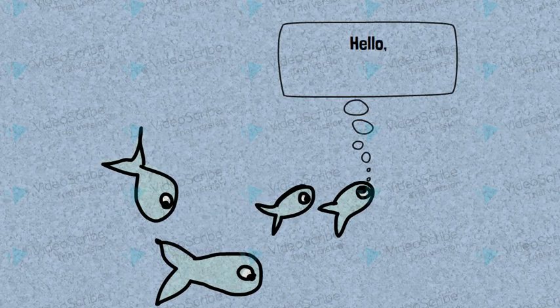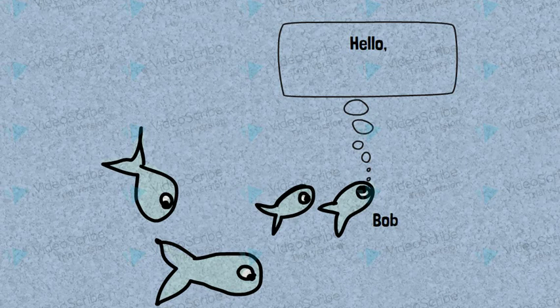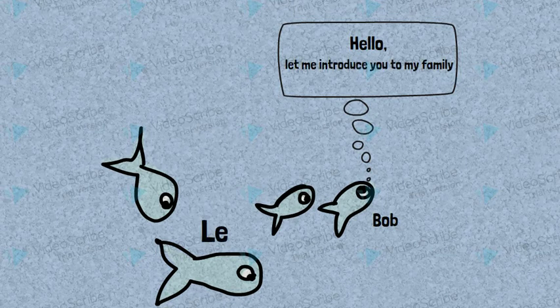Hello, my name is Bob. Let me introduce you to my family. Here's my dad Leo, my sister Juliet and my girlfriend Eve.